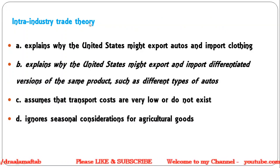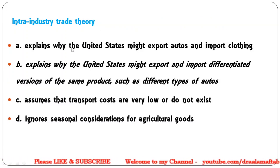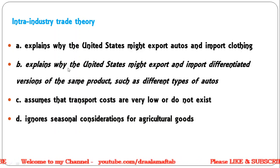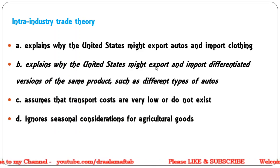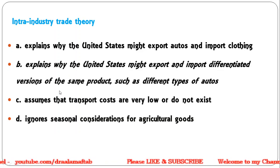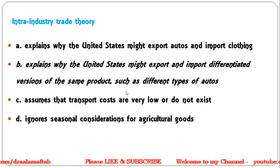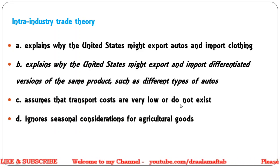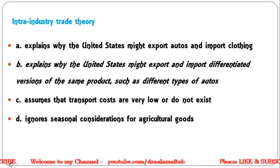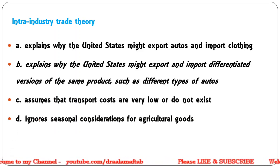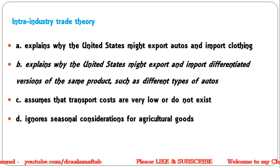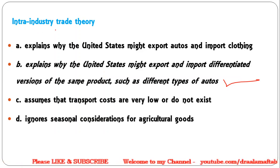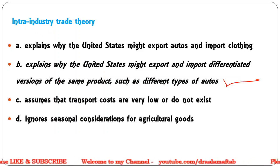Next: Intra-industry trade theory — explains why the United States might export autos and import clothing; explains why the United States might export and import differentiated versions of the same product such as different types of autos; assumes that transport costs are very low or do not exist; ignores seasonal considerations for agricultural goods. Correct answer is B — intra-industry trade means a country may be both exporting and importing the same type of commodity.